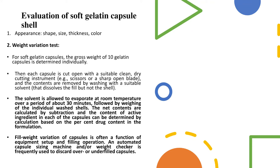Now let us start with the weight variation test. These tests are largely the same as those carried out for tablets but have been modified to also check the shell strength. In the case of soft gelatin capsules, the gelatin shell must be broken down first before the encapsulated mass comes out. Initially, 10 gelatin capsules are taken and cut open, and their contents are removed.